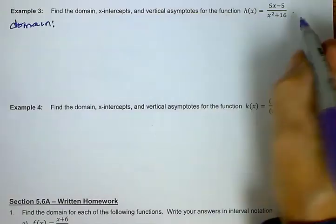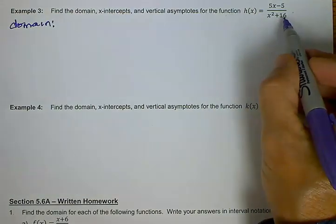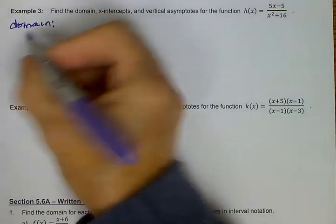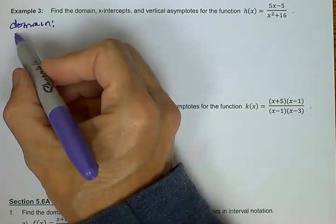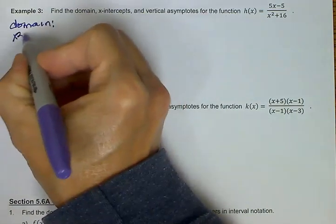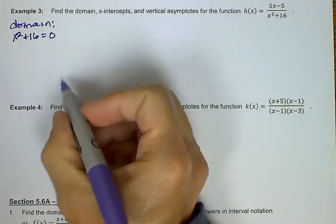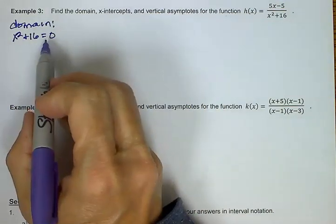Here's another example. For our domain, we're looking at what makes the denominator equal to 0. One way you can remember that is domain and denominator both start with d. I'm taking my denominator and just setting it equal to 0, and I want to try and solve this for x.